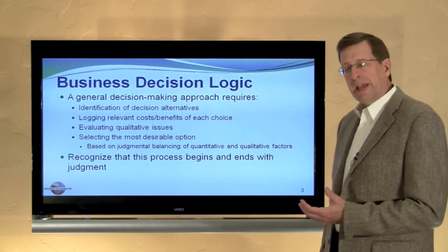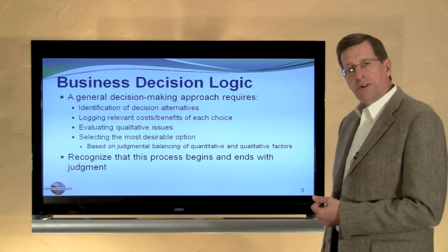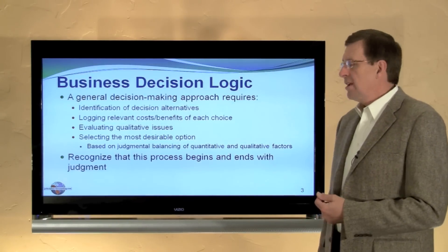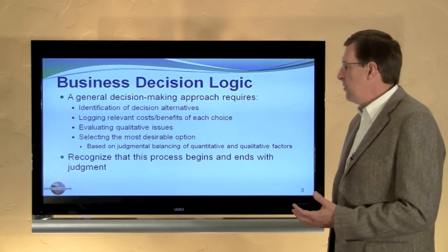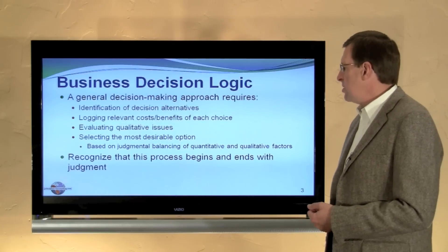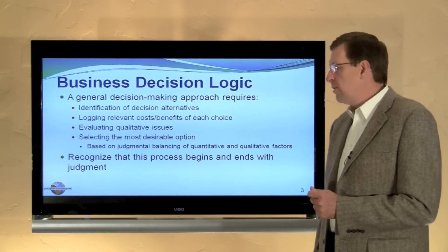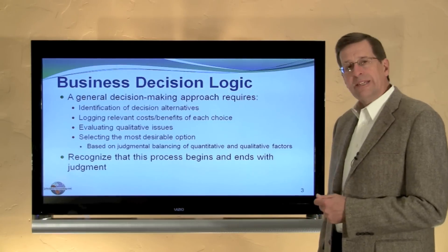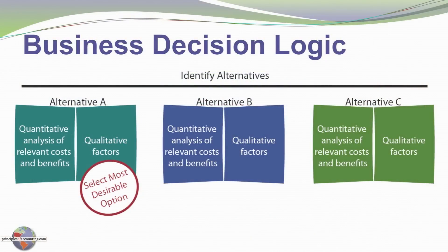The general decision-making approach is to identify your decision alternatives, log the relevant costs and benefits of each choice, evaluate all of the qualitative issues, and select the most desirable option based on a judgmental balancing of quantitative and qualitative aspects. The process begins and ends with judgment. One should clearly look at both quantitative and qualitative factors in trying to make business decisions.